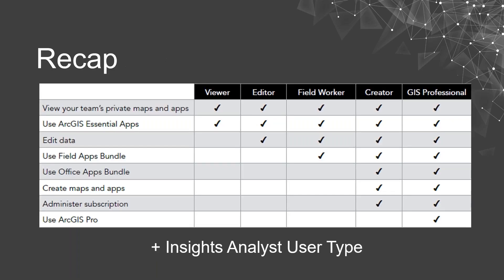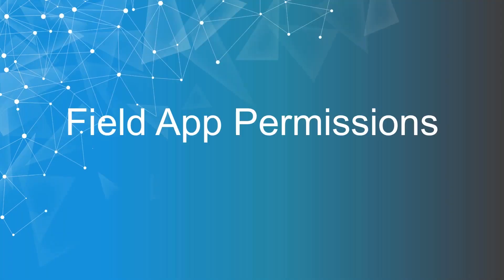As a quick recap, we can put the five main user types and their capabilities in a matrix, with the Insights Analyst user type sitting outside that table. The GIS professional user type comes in the three flavors of Basic, Standard, and Advanced. For the next section I'd like to share insight on how user types and permissions are broken down for the specific field applications.